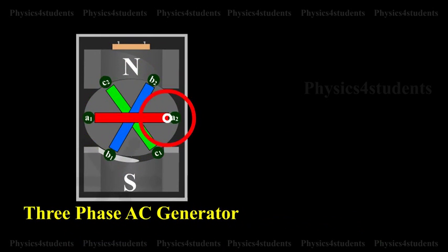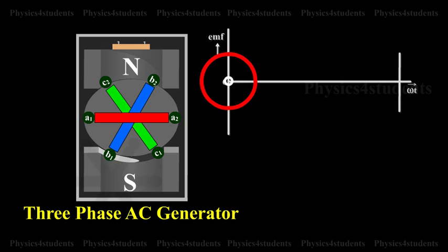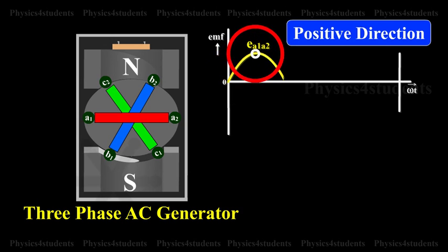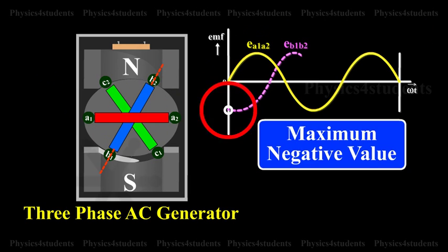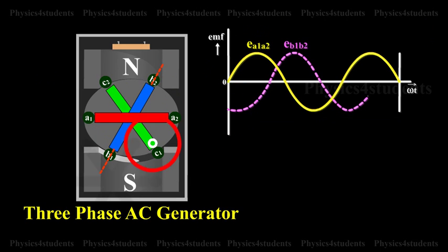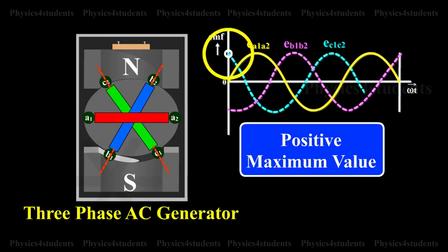When the coil A1-A2 is in position AB, the EMF induced in this coil is zero and starts increasing in the positive direction. At the same instant, the coil B1-B2 is 120 degrees behind coil A1-A2, so the EMF induced in this coil is approaching its maximum negative value. The coil C1-C2 is 240 degrees behind the coil A1-A2, so the EMF induced in this coil has passed its positive maximum value and is decreasing.